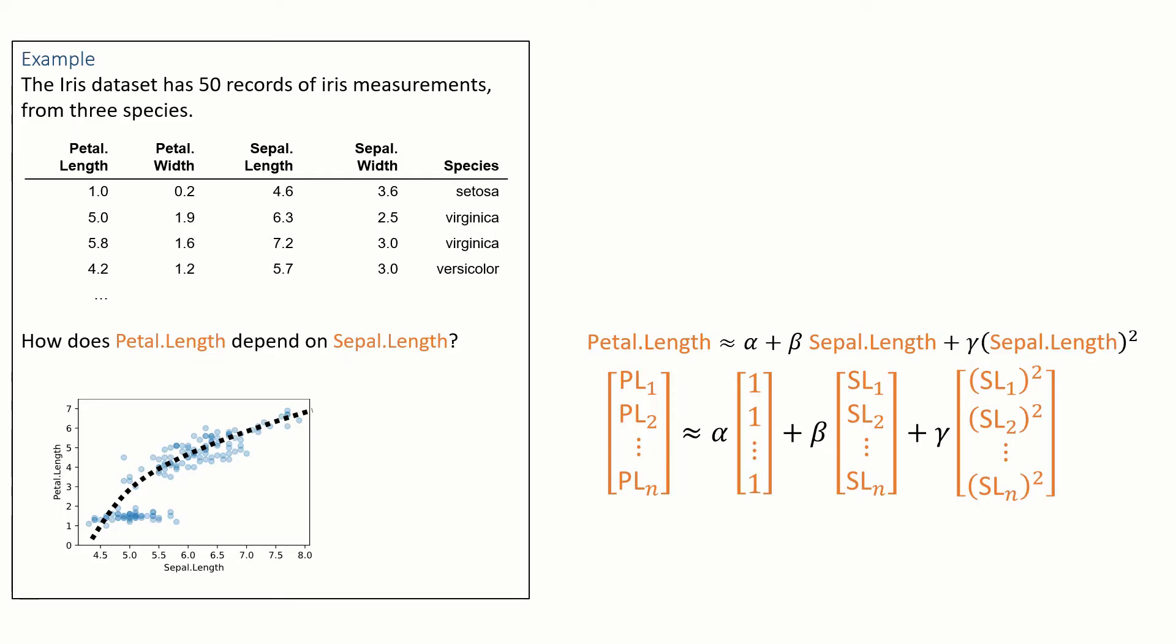In the last few videos we've been talking about linear models like this one from the famous iris dataset where we wanted to model how petal length depends on sepal length. We looked at this linear model to fit the curve we think we see in the data.